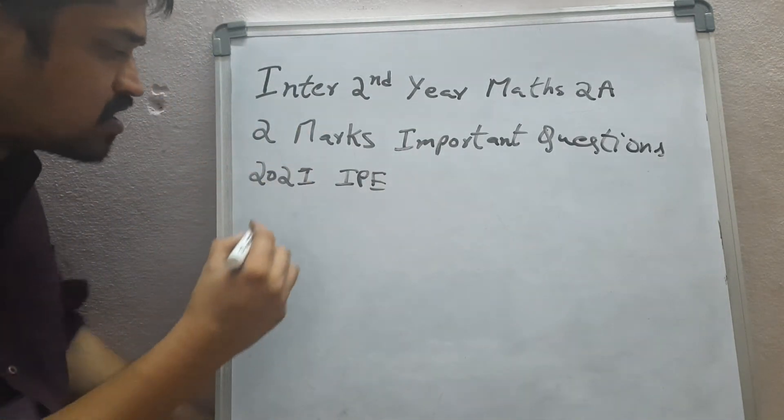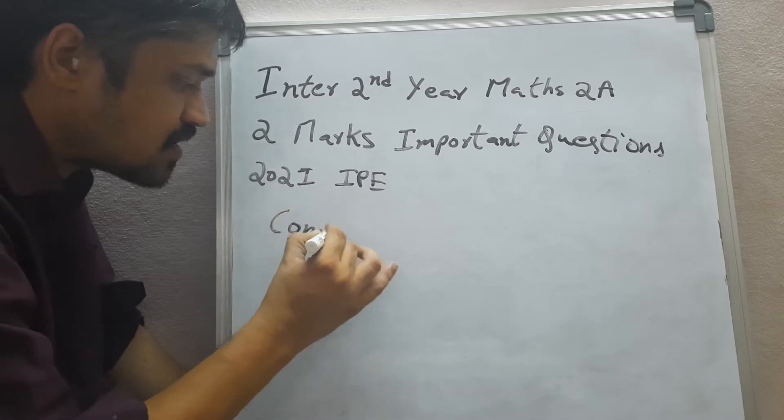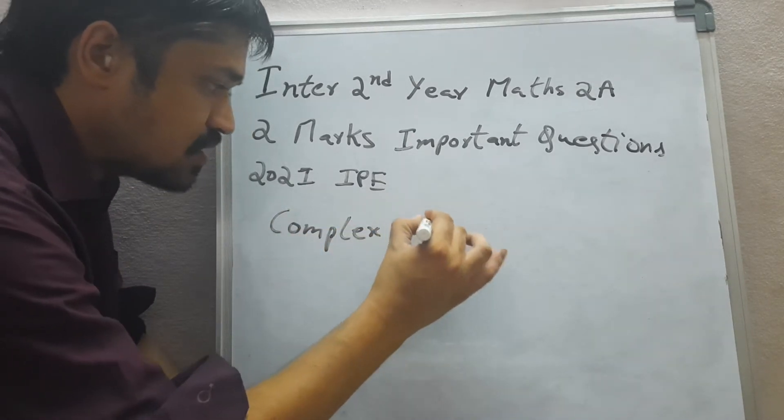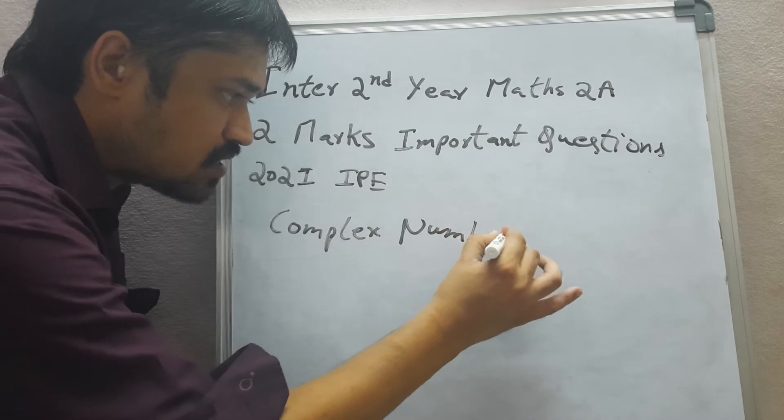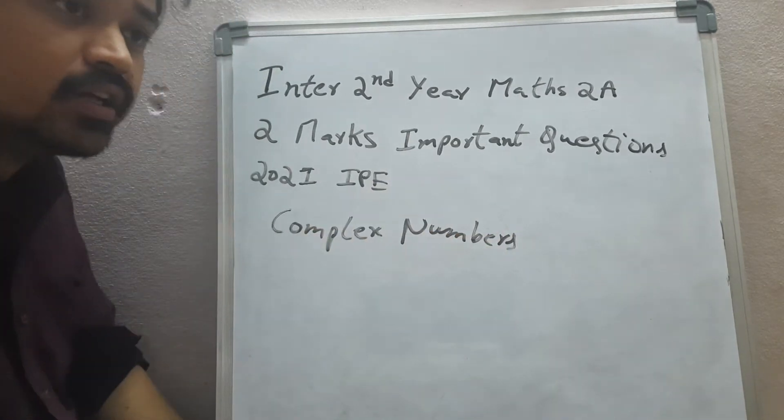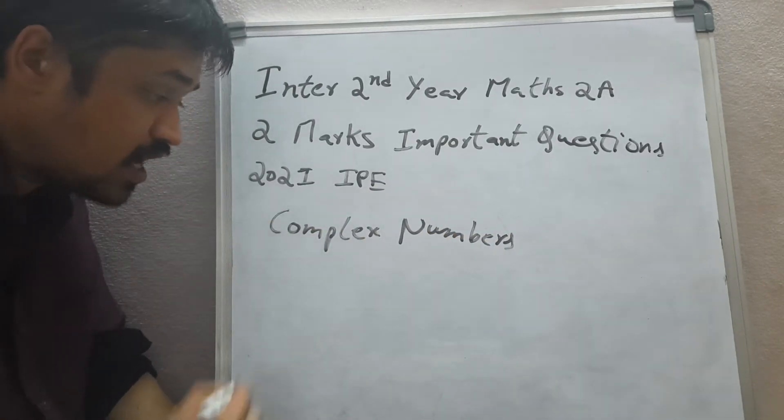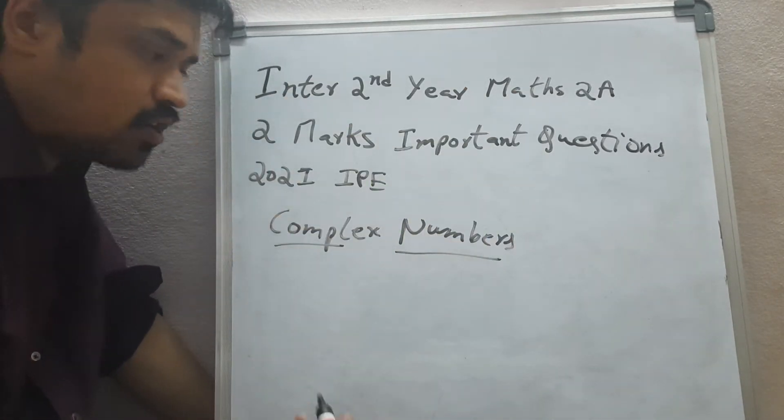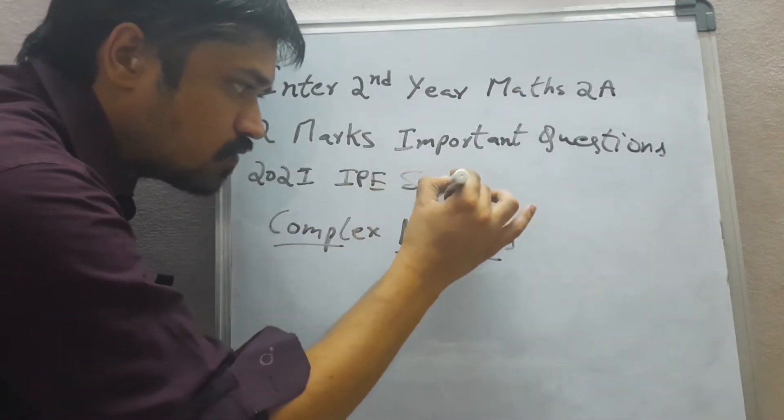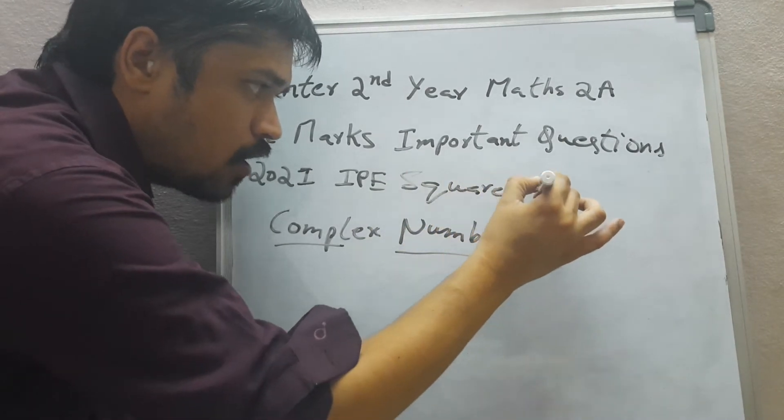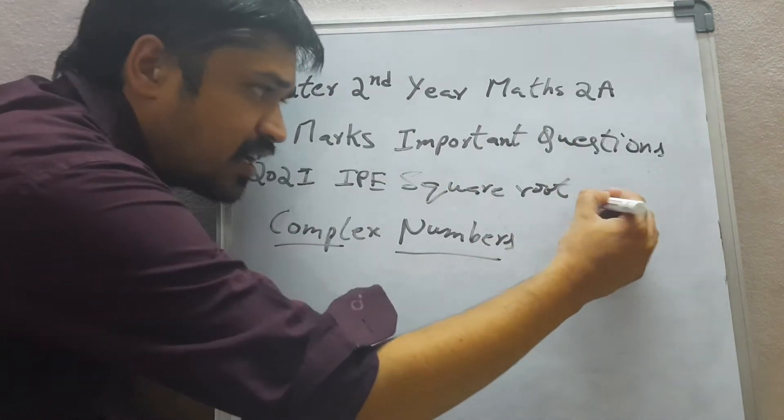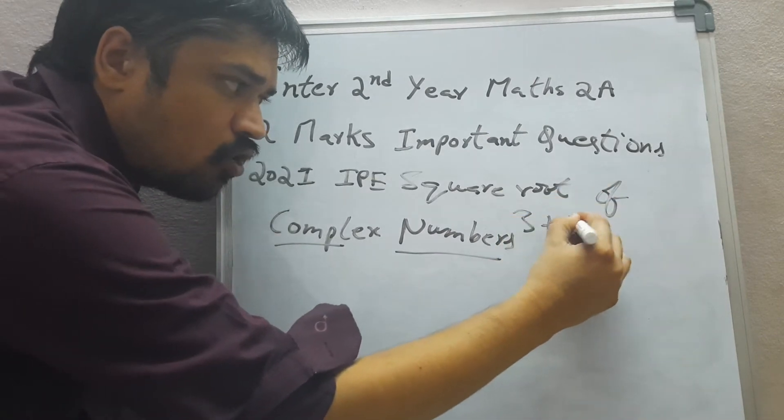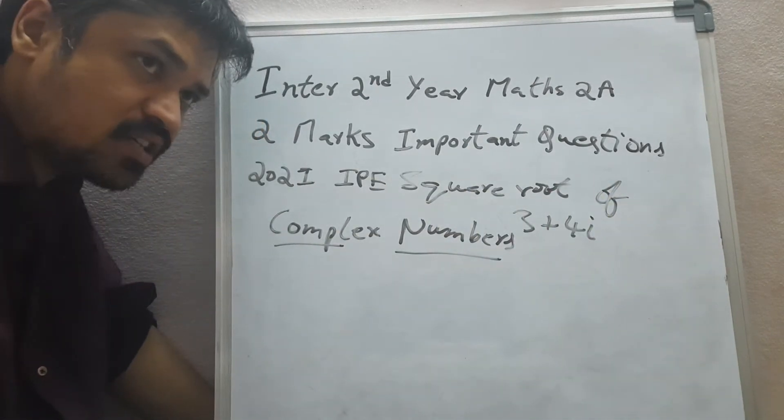For suppose, if we consider complex numbers. Complex numbers is a very important chapter in Maths 2A. In this complex numbers, one of the most important concept is nothing but square root. What is the square root of any problem like 3 plus 4i?